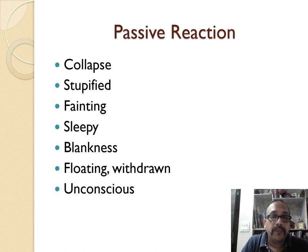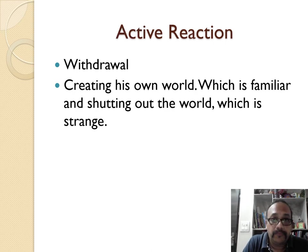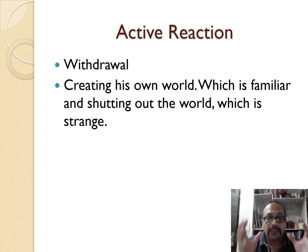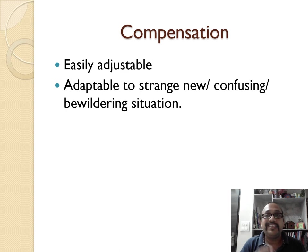The passive reaction is collapsed, stupefied — when not able to understand, there is fainting, sleepiness, blankness, floating, and unconsciousness. They are floating plants, not yet grounded. The active reaction is withdrawal — when confused with the outer world, they shut themselves and create their own familiar world, while the outer world seems strange. The compensation is being easily adjustable and adaptable to strange, new, confusing, and bewildering situations. This confused and bewildering quality runs through the whole subclass.